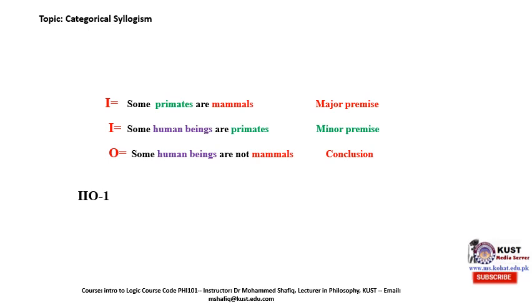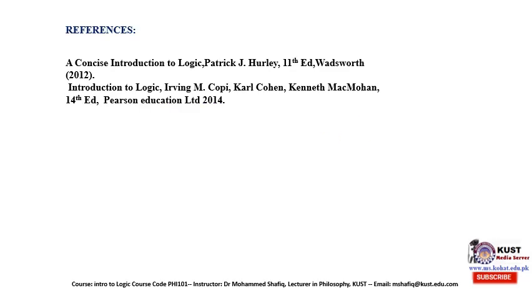These are the different forms of categorical syllogism and how to determine the mood and figure. I hope you enjoyed this lecture. If you did not understand anything or have any comments, queries, or questions, please do let us know so that we can discuss this in our next lecture. Until then, take care, and you can consult the reference book if you want to study further. Thank you very much. Allah Akbar.